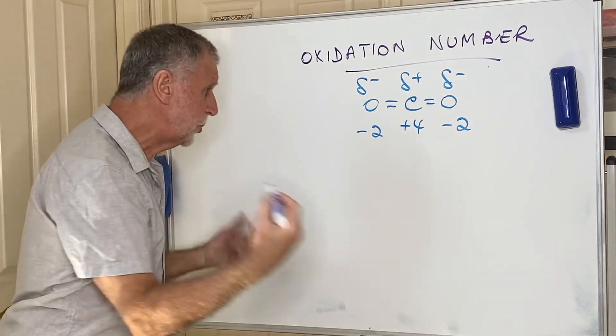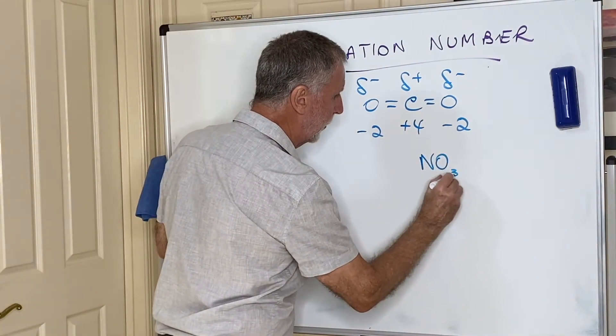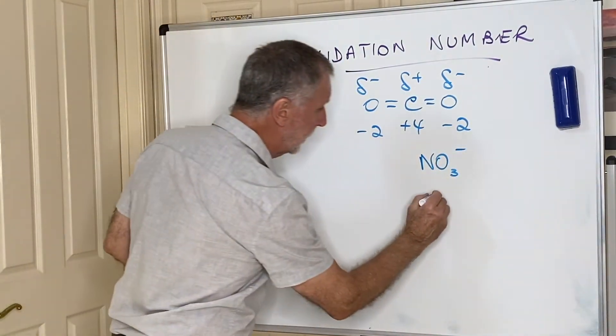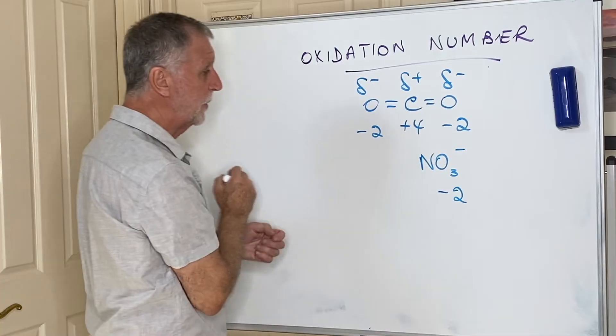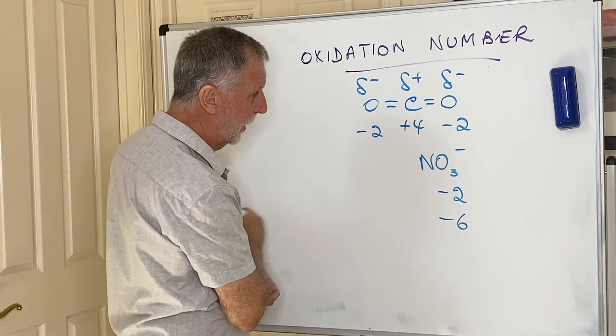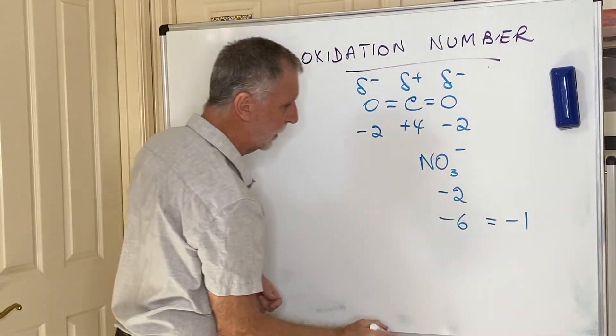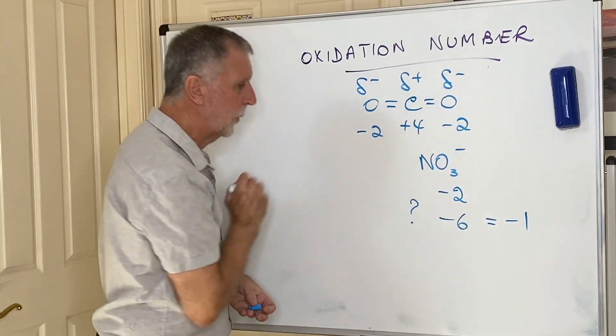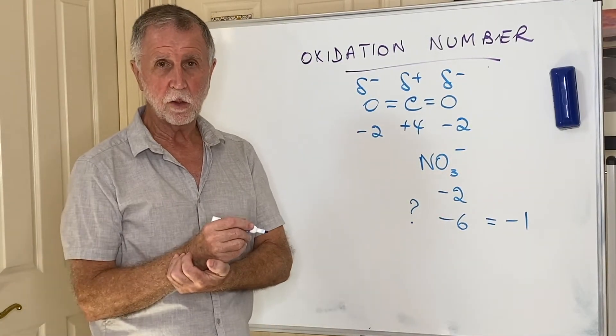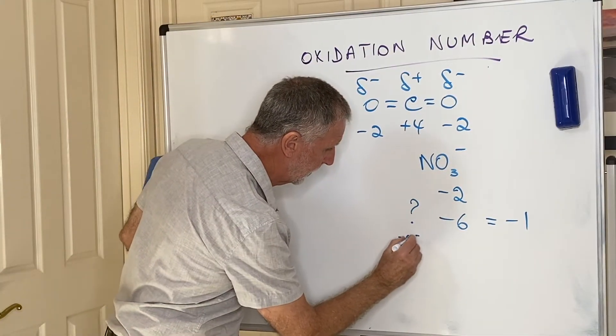What if it had a charge? What if it had something like the nitrate ion NO3-? Well, again, oxygen will be -2. It's more electronegative than nitrogen. Three of them means the total would be -6, and one of those charges is left over. So therefore, what would nitrogen have to be in an ion like NO3-? Hopefully you can see that would be a +5.